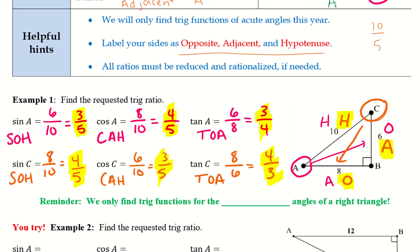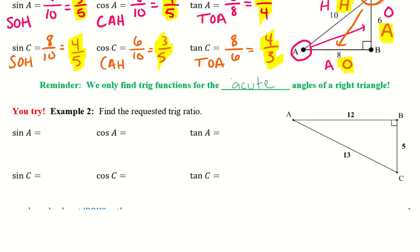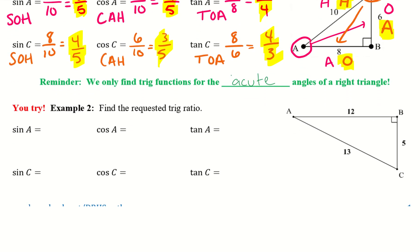Reminder: we only find trig functions for the acute angles of a right triangle. That means we don't use the 90-degree angle — I couldn't say let's use angle B and find that, because that should always be the 90-degree angle. Go ahead and take a look at example 2 and try it out, then pause the video.